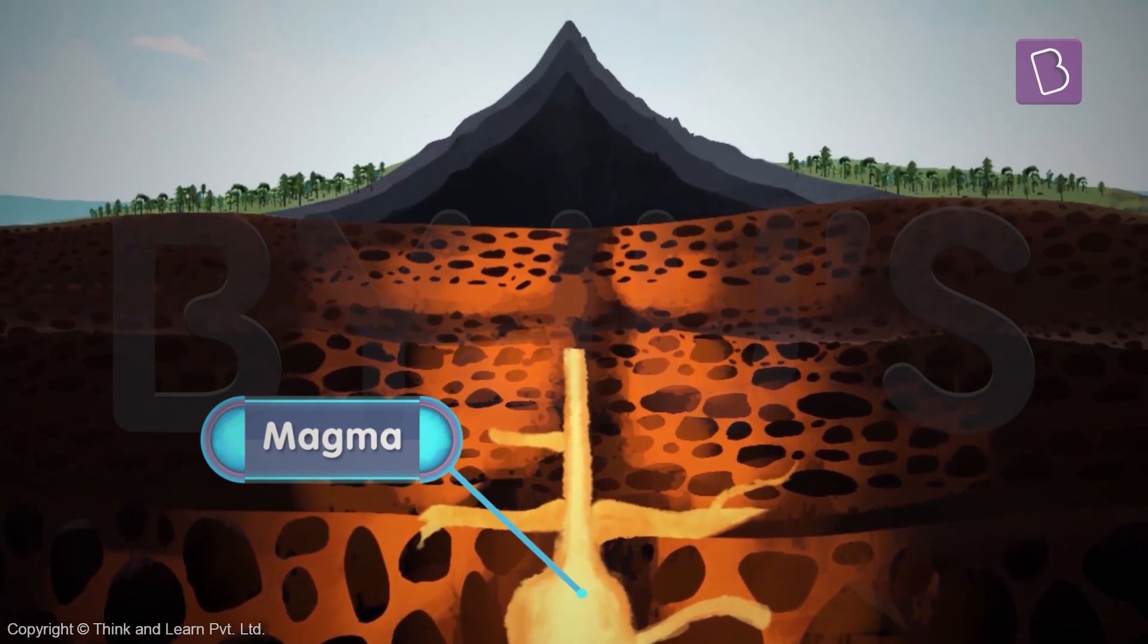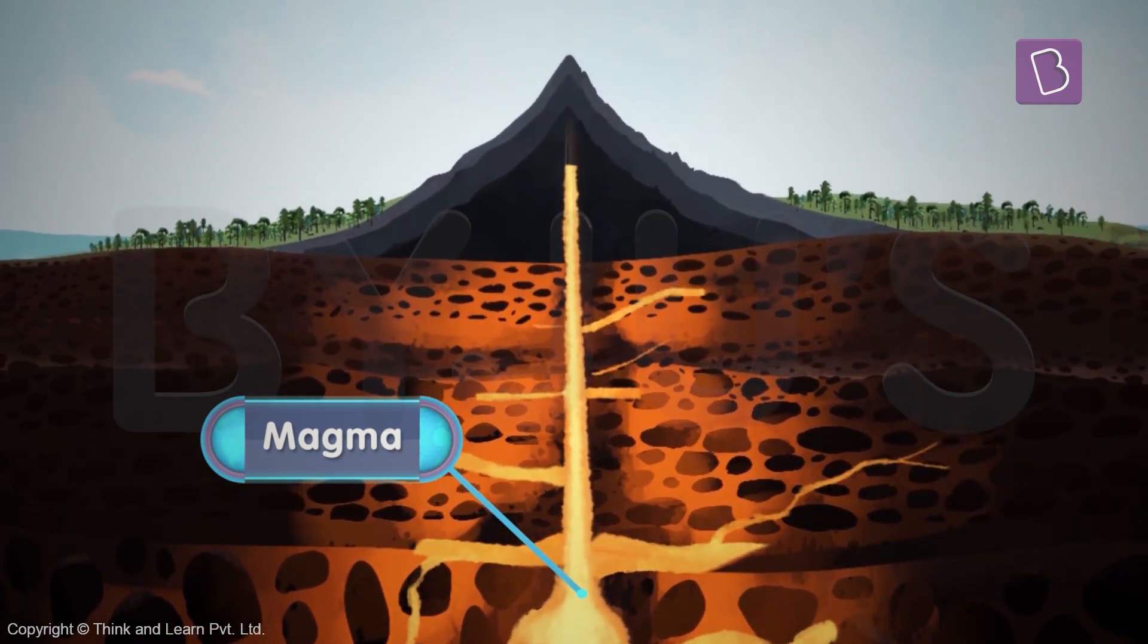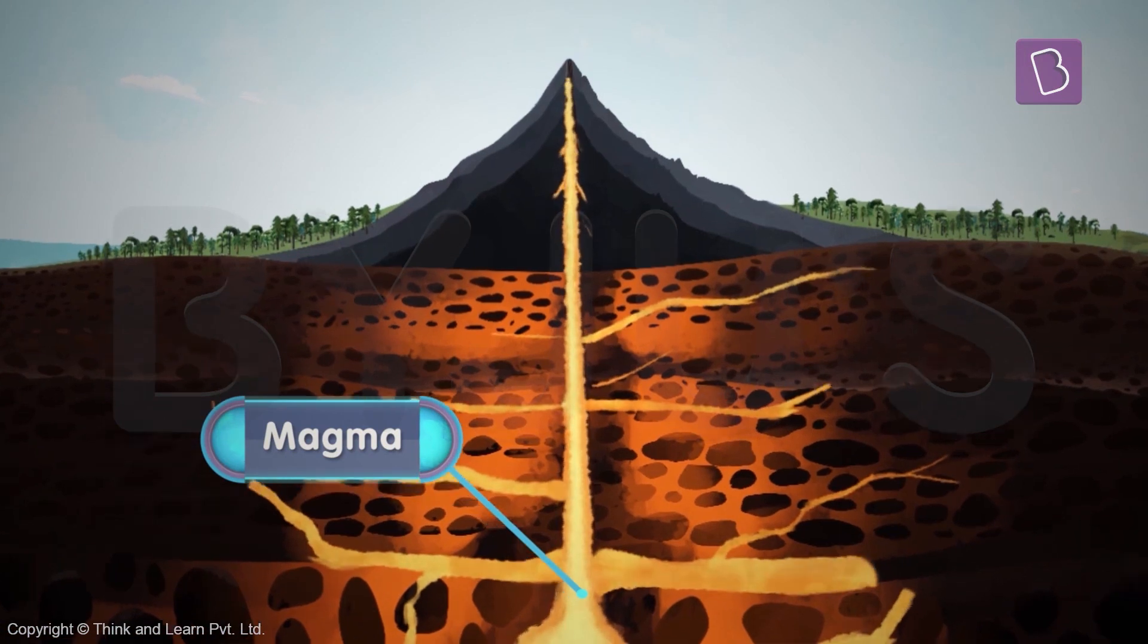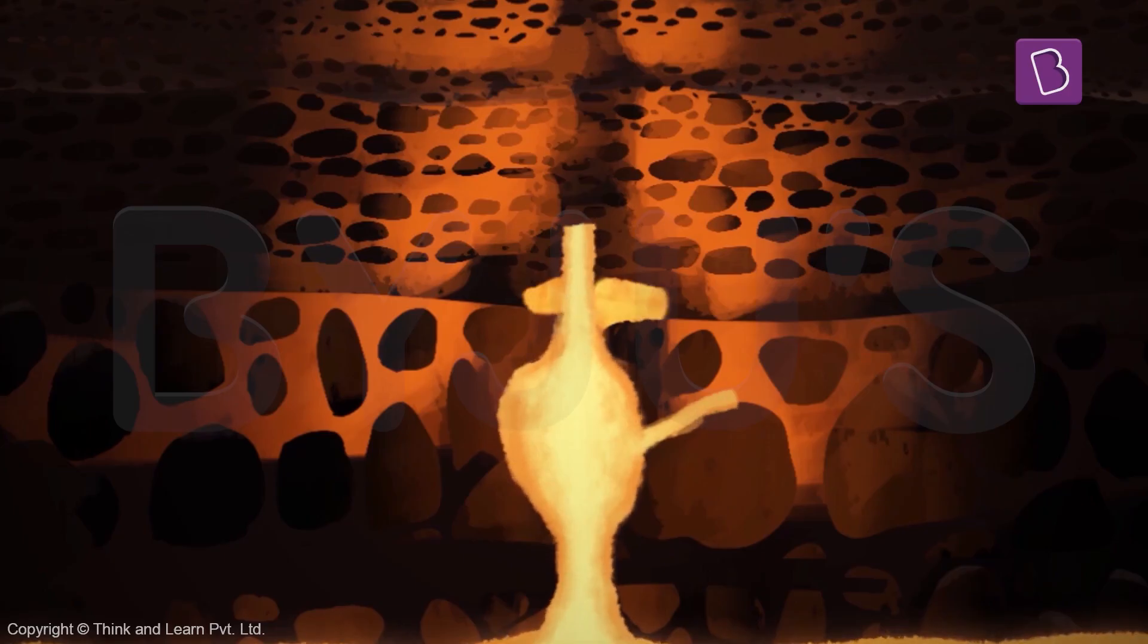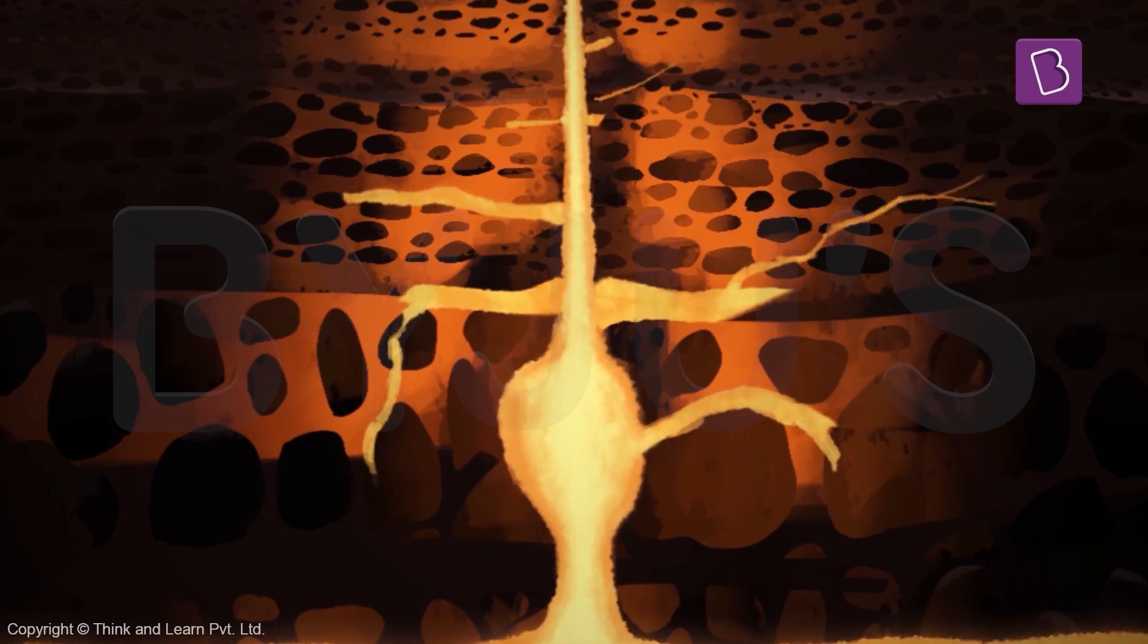The magma passes through the cracks in the earth's crust and then flows out through the vent of the volcano. So these cracks act as channels for the magma to be transported to the surface.